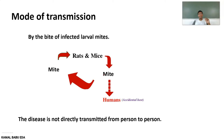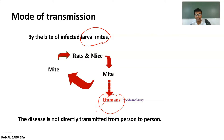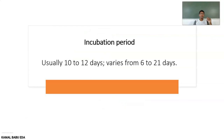Scrub Typhus is mainly transmitted by the bite of infected larval mites. The mite infects rats and mice, and from these rodents the mites get infected. Whenever this mite comes in contact with humans — who are the accidental host — the disease is transmitted. This disease does not occur from person to person; it must be transmitted through infected mites.